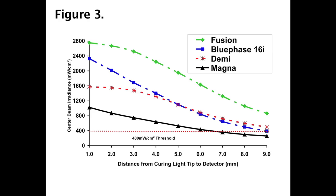Table 1 and Figure 3 in the article show how the irradiance falls from each of the four curing lights as the distance between the tip of the curing light and the sensor increases from 1 to 9 mm.